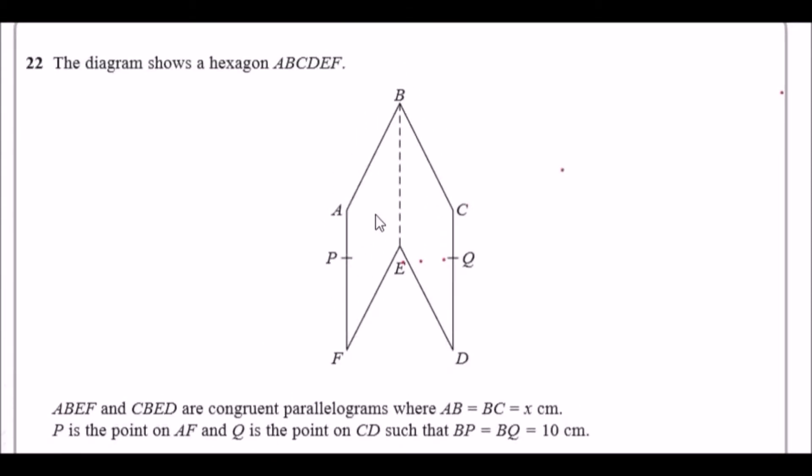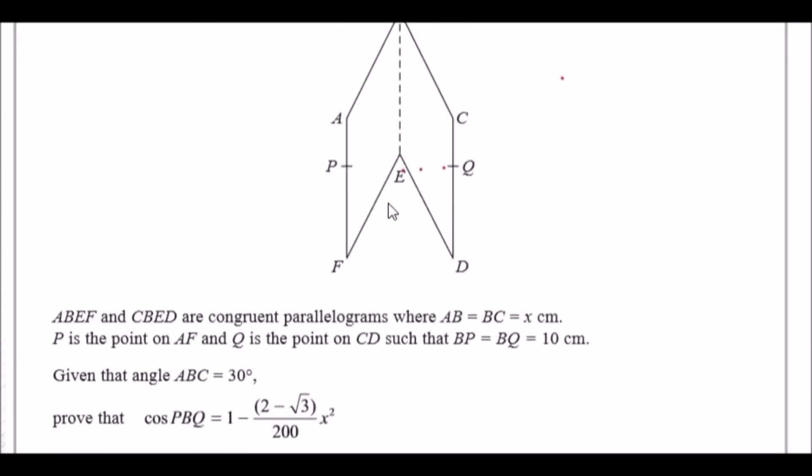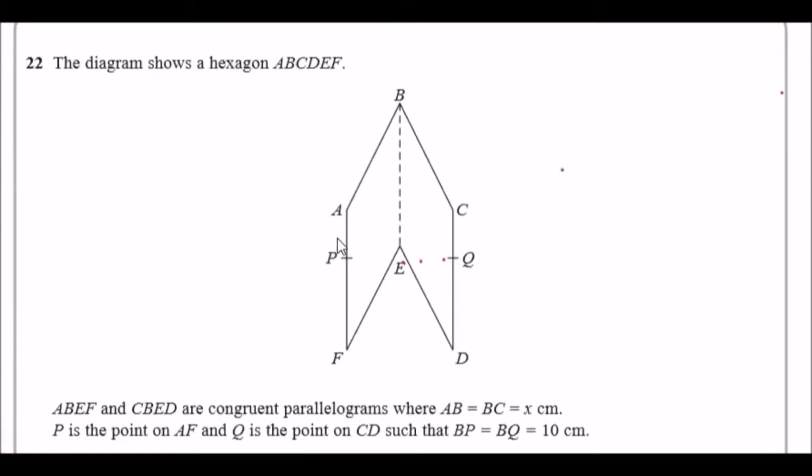They look congruent or identical probably. Now ABEF, so the left side, and the right side of the shape are congruent parallelograms where AB equals BC equals x. So like it says, call them x.